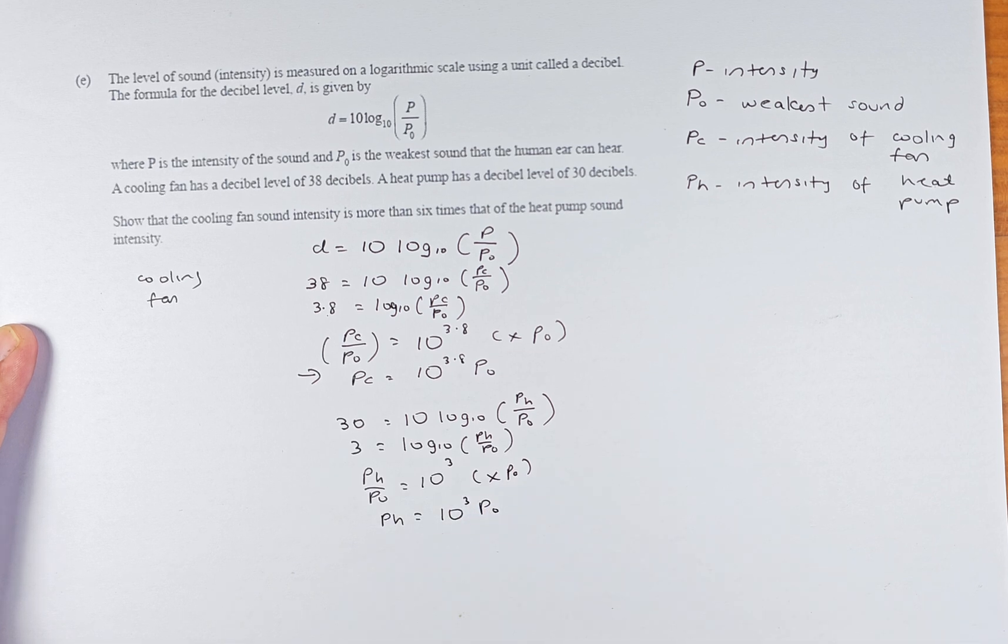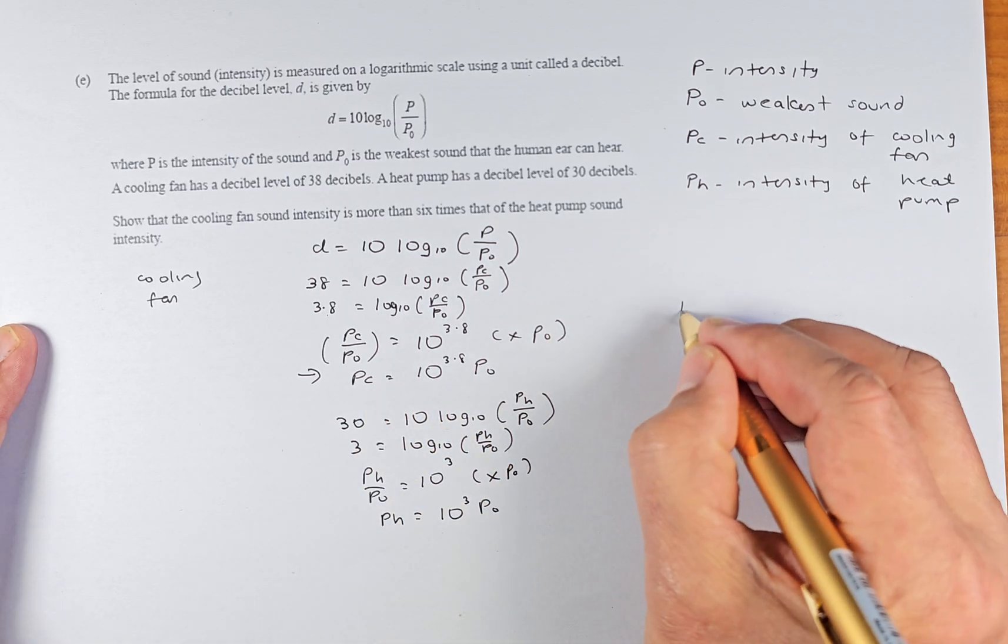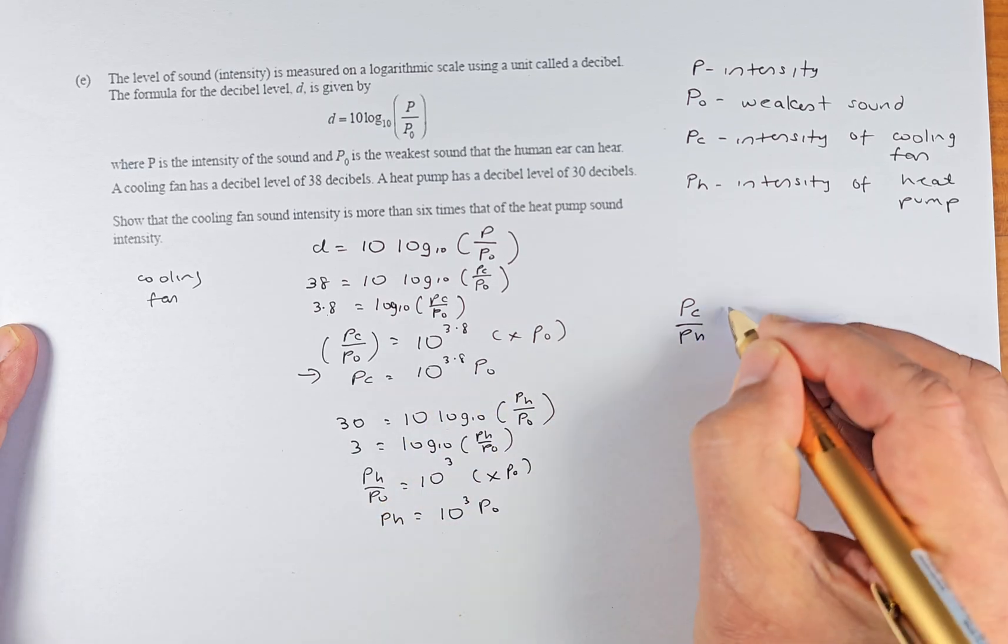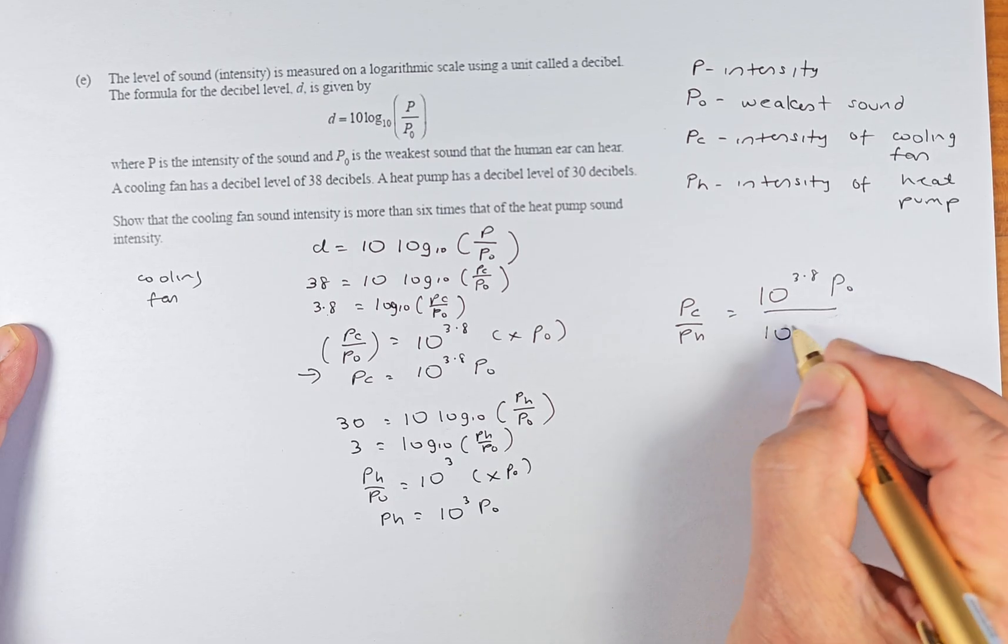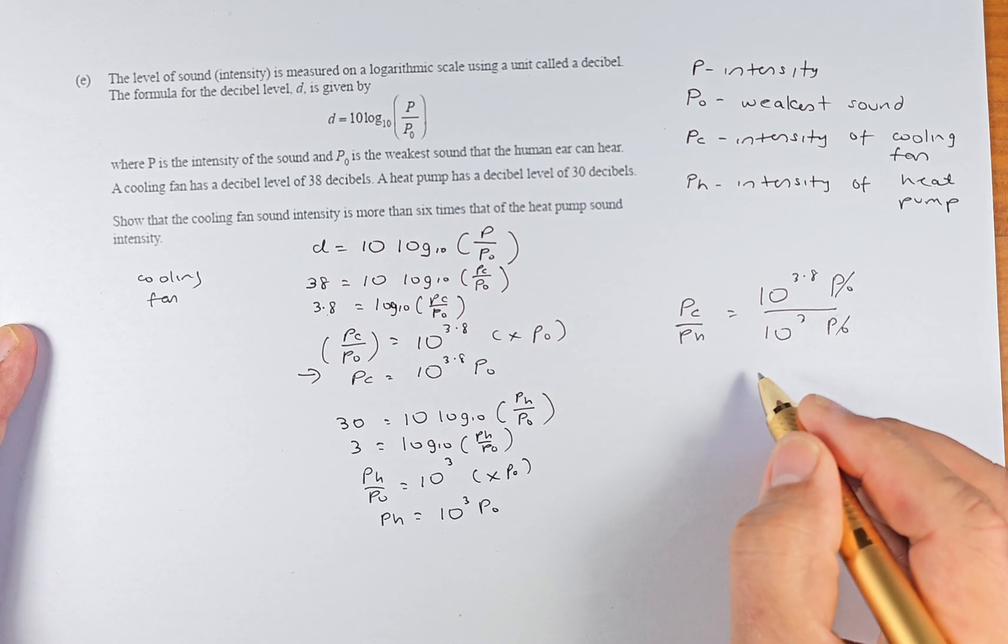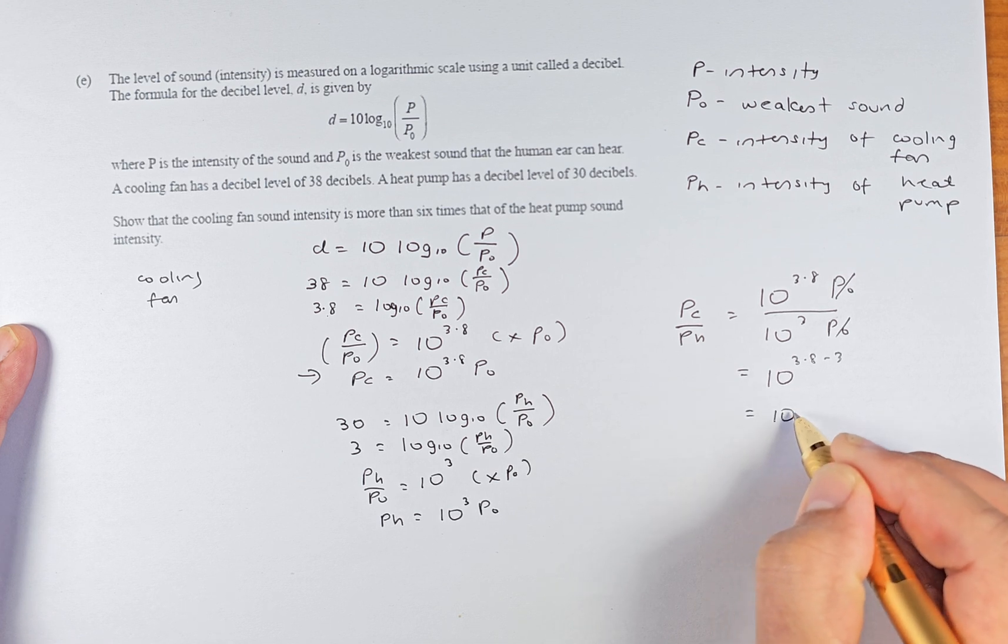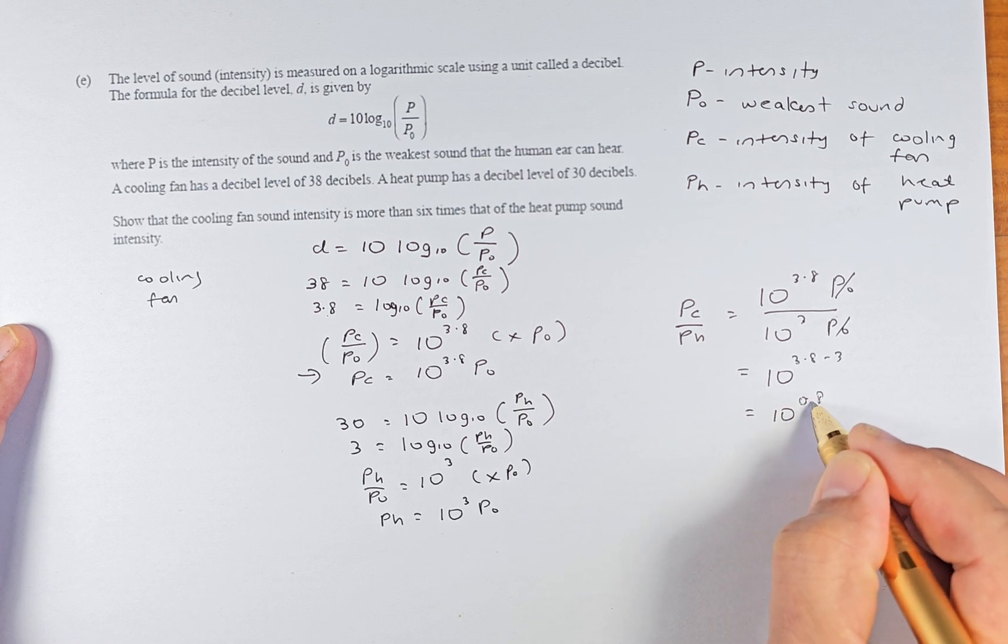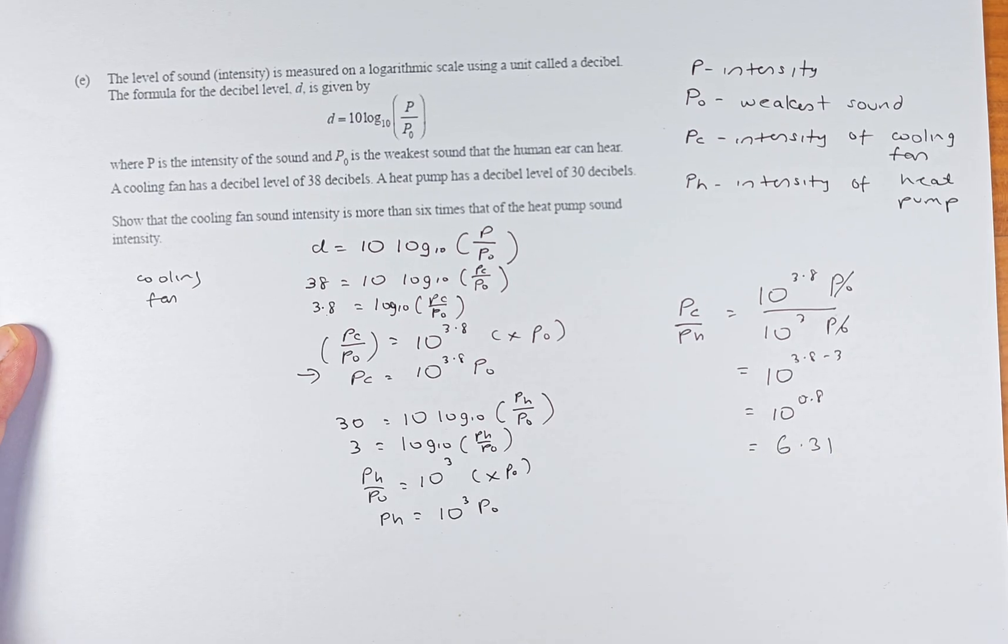The question says the cooling fan sound intensity is more than 6 times, so we divide Pc over Ph. Pc/Ph = (10^3.8 × P₀)/(10³ × P₀). We cancel the P₀ because they are the same. To simplify, we take 10^(3.8-3), and the answer is 10^0.8. If you put in your calculator 10^0.8, the answer comes to 6.31, which is more than 6 times.